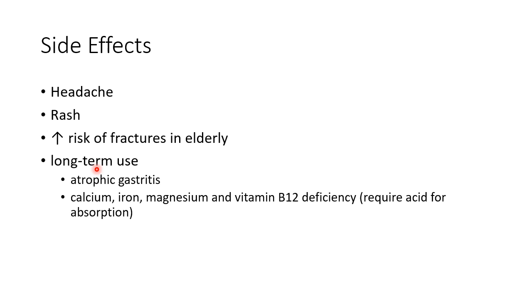Long-term use of proton pump inhibitors can lead to atrophic gastritis and deficiency of calcium, iron, magnesium, and vitamin B12. This is because these nutrients require acid for absorption.